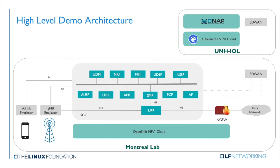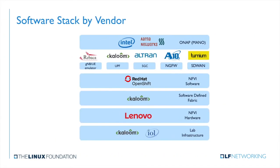Today's demo is going to be somewhat simplified. All of this is going to be in one region — the University of New Hampshire interoperability lab. We are also not going to show the next-gen firewall. This demo has been put together through massive collaboration by a large number of companies, showing the various companies by the layer they participated in, all the way from the lab infrastructure to the management and orchestration layer.